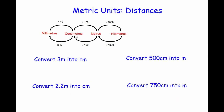Now we're going to focus on centimeters and meters. Change 3 meters into centimeters — that's going to be 300 centimeters, because 3 times 100 is 300. One meter is 100 centimeters, so 3 meters would be 300 centimeters. Next: convert 500 centimeters into meters. To change from centimeters into meters we divide by 100, so that gives us 5 meters. That makes sense because 100 centimeters is 1 meter, so 500 centimeters would be 5 meters.